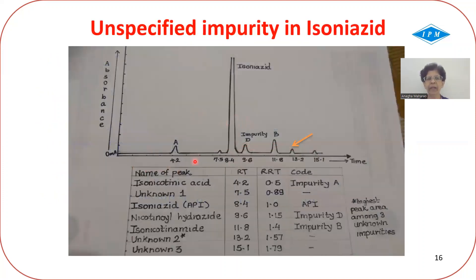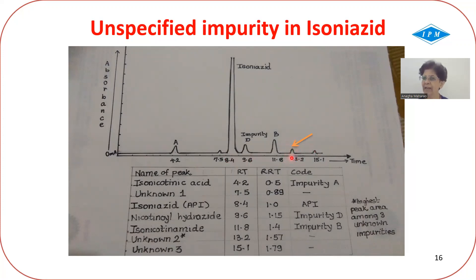Looking at the picture, there are three unknown impurities. Among these three, we select the one with the highest peak area and report that as the unspecified impurity in isoniazid.